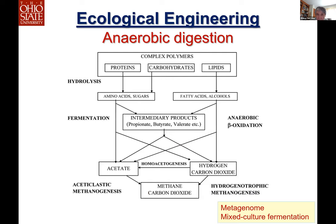Another upcoming area is ecological engineering. In nature, it's not a single organism working to produce the final product. An example is anaerobic digestion — all kinds of complex polymers: protein, carbohydrate, lipid, can be converted to final products, methane and carbon dioxide. People have been working on finding microorganisms that can more easily break down complex molecules to get organic acid and alcohol in addition to methane. Methane is a low value product. This was actually my PhD research at Purdue more than 40 years ago.